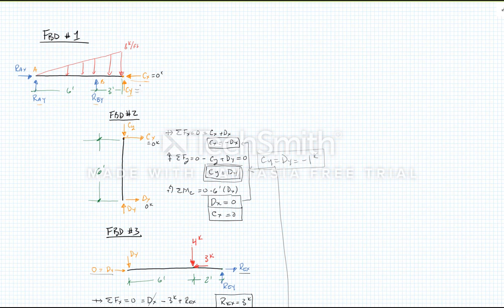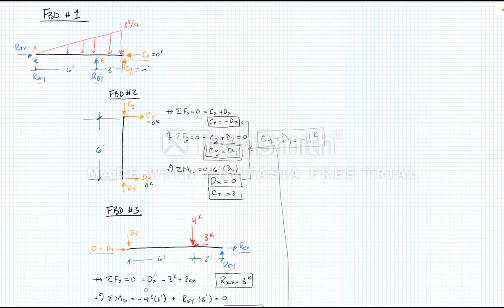This brings us back to our first free body diagram. Now CY is equal to minus one kip, which is the same as saying it's one kip going down. Now we only have three unknowns in free body diagram number one and we can solve them. Let's solve the easy one first.